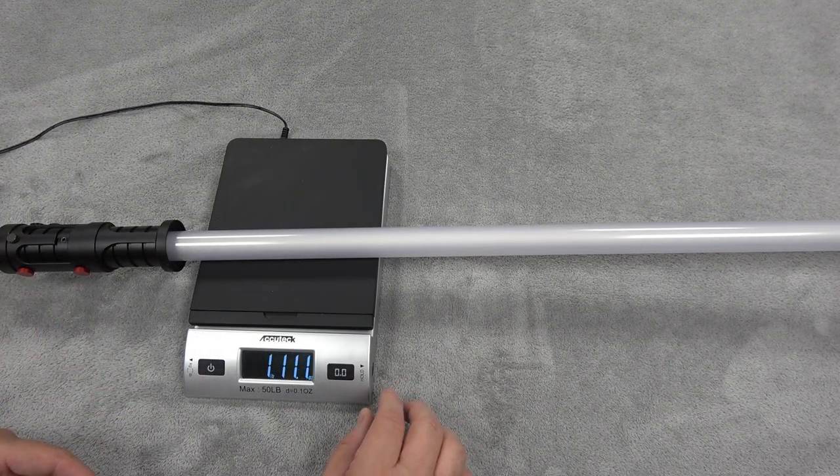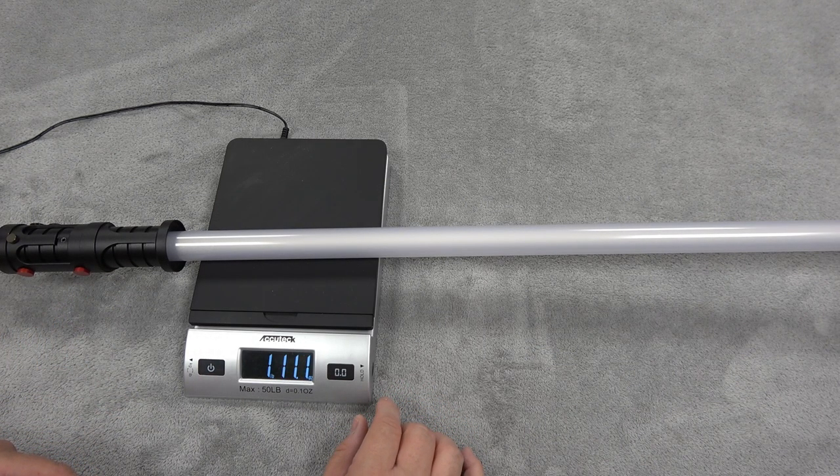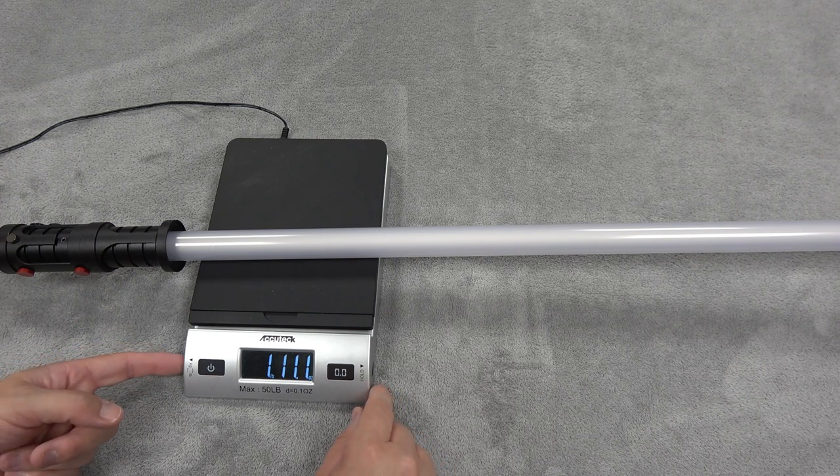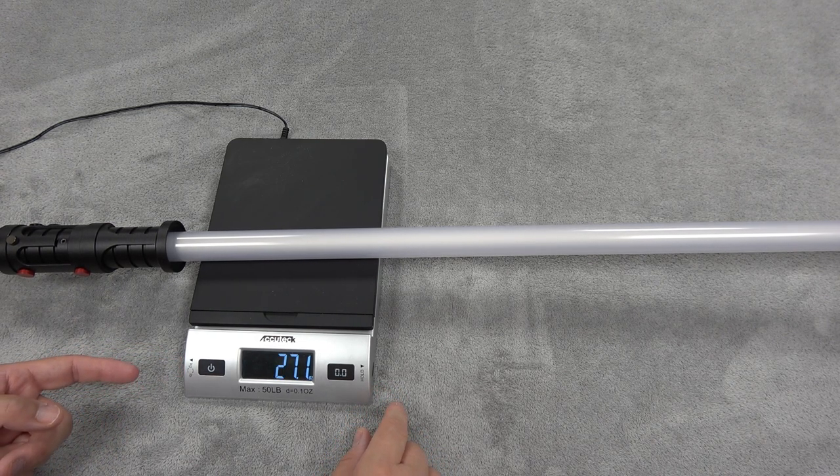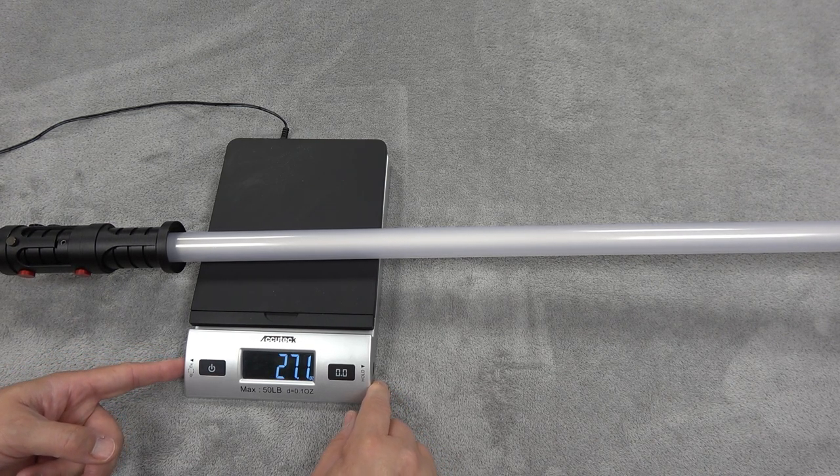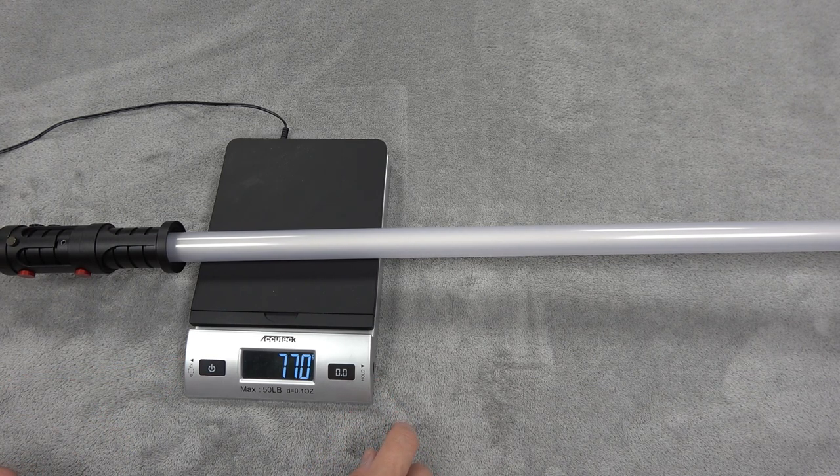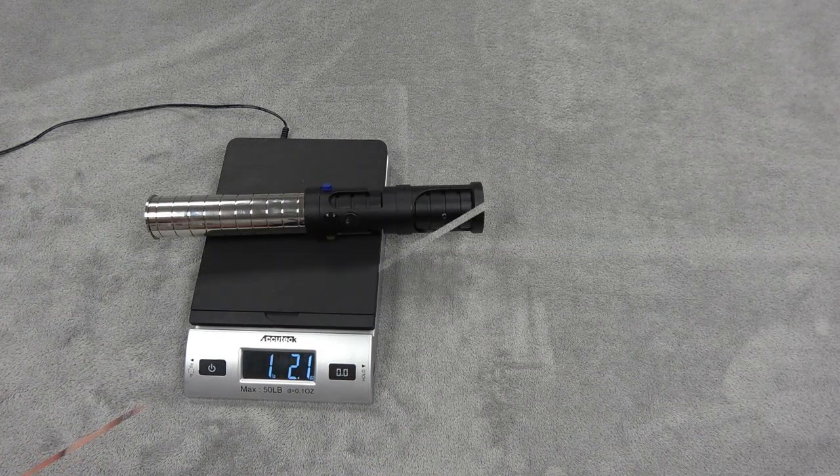With a blade, this comes in at one pound, 11.1 ounces, which is 27.1 ounces or 770 grams.